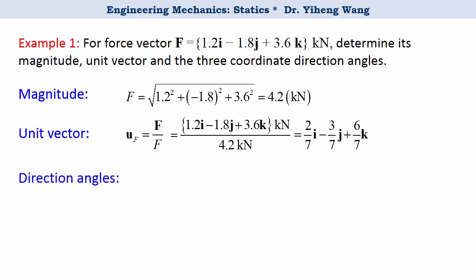And then lastly for the direction angles. Remember the x, y, and z components of the unit vector are the cosine values of the three angles alpha, beta, and gamma. Therefore angle alpha, which is the angle made by the vector with the positive direction of the x-axis, equals the inverse cosine, or arc cosine, 2 over 7 to be 73.4 degrees.